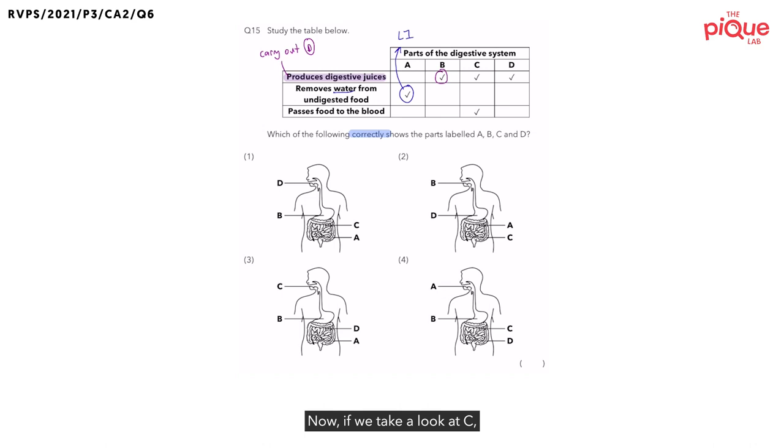So, let's take a look at C next. Now, if we take a look at C, we can see that it can produce digestive juices and it also passes food to the blood. Now, which organ is the one that will pass the digested food to the bloodstream? This is the function of the small intestine. So, I'm going to write this out. We know C is the small intestine.